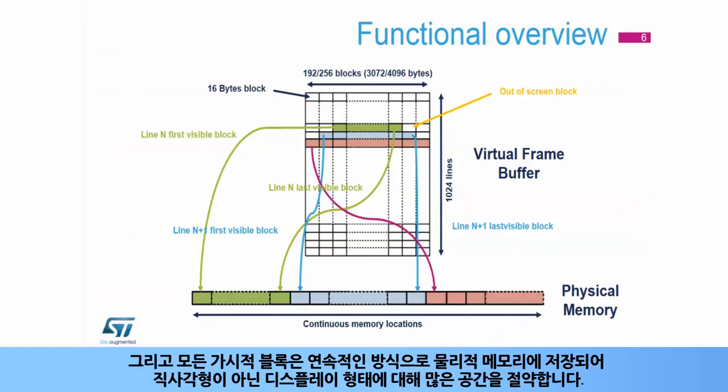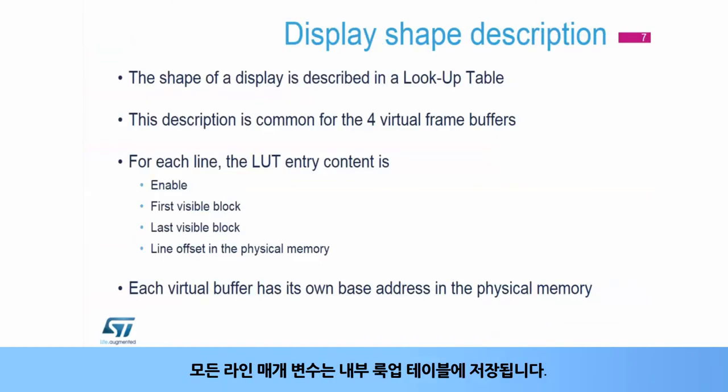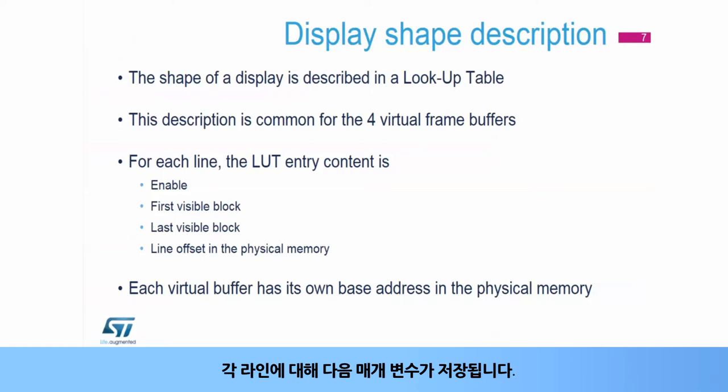All the visible blocks are stored in the physical memory in a continuous way, saving a huge amount of space for non-rectangular display shapes. All the line parameters are stored in an internal lookup table. The description is the same for all four virtual frame buffers.